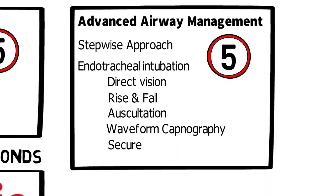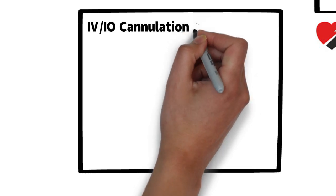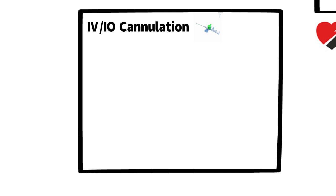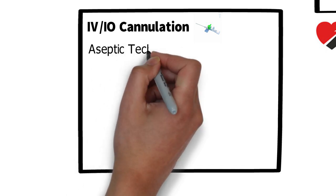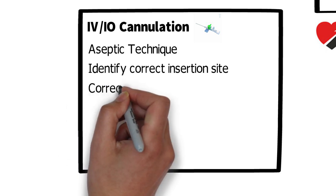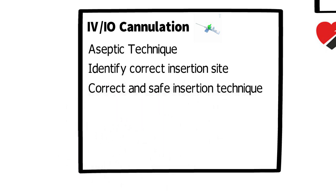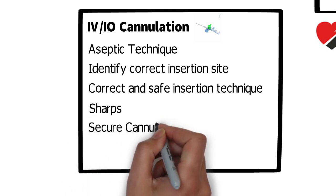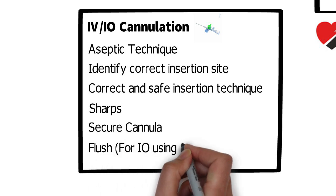For IV or IO cannulation, it's important to note that gaining rapid vascular access in children is often quickest using an intraosseous needle, so this should be used in preference to an IV cannula unless a suitable IV site is immediately apparent. Key things we're looking for are aseptic technique throughout, correct insertion site, correct and safe insertion technique using the EasyIO, sharps safety and disposal, securing the IO cannula, and a flush using a three-way tap.